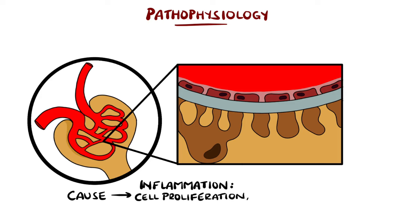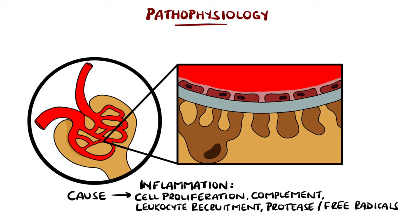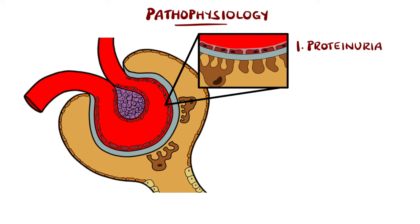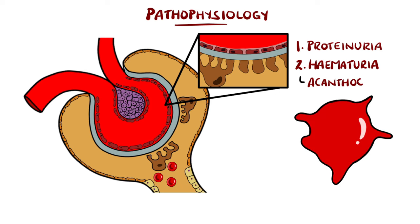Overall, the inflammation features cellular proliferation, complement activation, recruitment of leukocytes, and production of proteases and free radicals, that ultimately lead to injury of the kidney. This then leads to the characteristic features. For example, injury to the glomerular filtration membrane allows protein to leak into the urine, though not as much as is seen in nephrotic syndrome. Red blood cells can also pass through, causing hematuria, and they can be dysmorphic, with acanthocytes in particular suggesting glomerular injury.